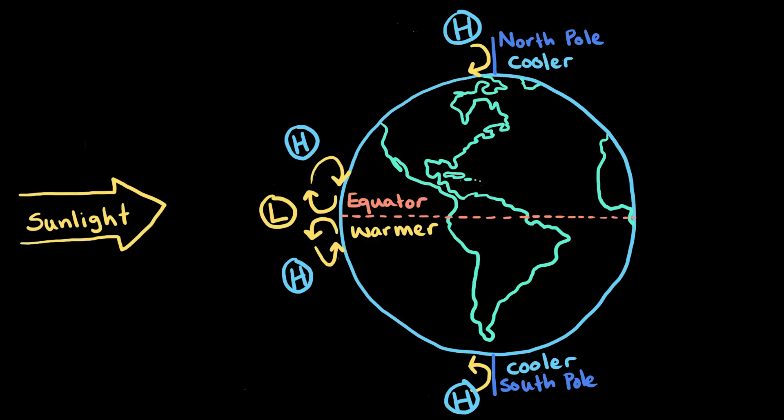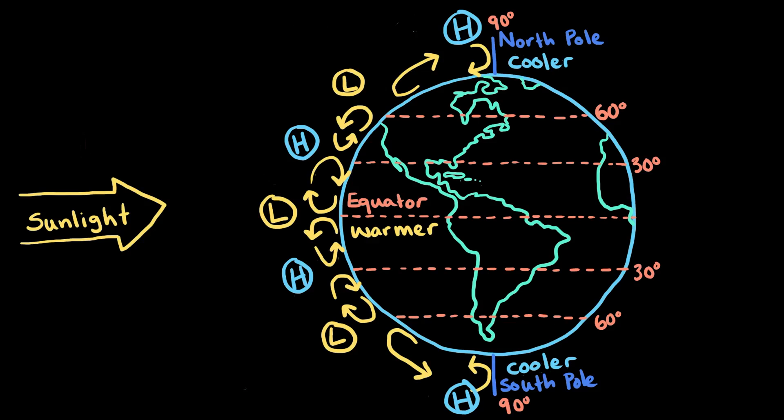Because the air is now cooler, it starts to sink again and creates a high pressure band near these latitudes. This process repeats and creates a pattern of high and low pressure bands from the equator to the poles.